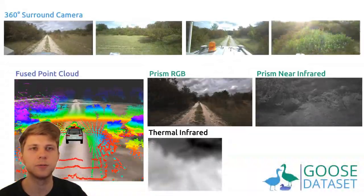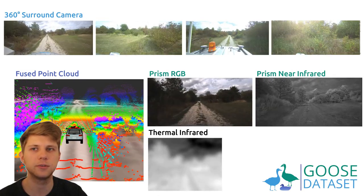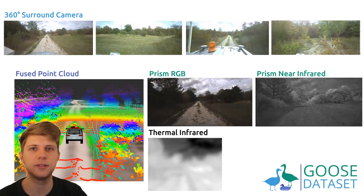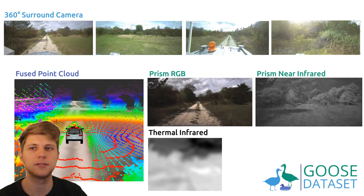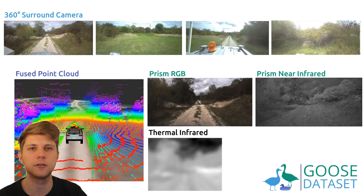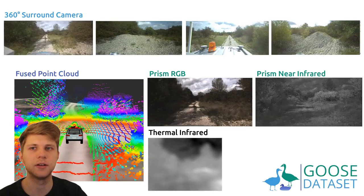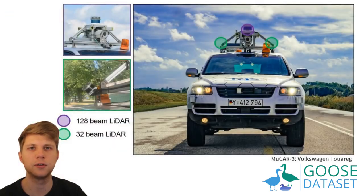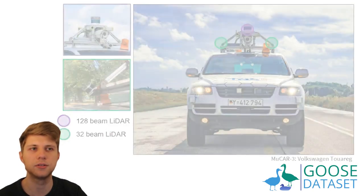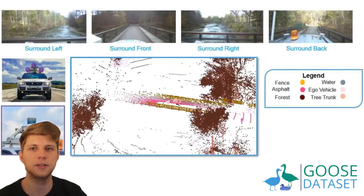Mucar 3 is equipped with multiple camera, lidar, and radar sensors. For the GOOSE dataset, we selected the front-facing PRISM camera to be semantically segmented. The PRISM camera records both an RGB color image and a near-infrared image from the same camera perspective. The point cloud from a 128-beam lidar sensor on the roof, together with two side-facing 32-beam lidar sensors, is fused and also semantically segmented for the same scene as the camera image.